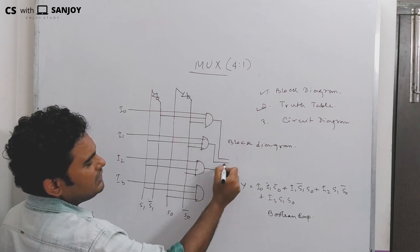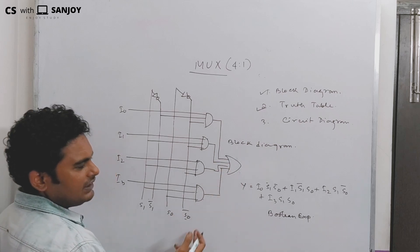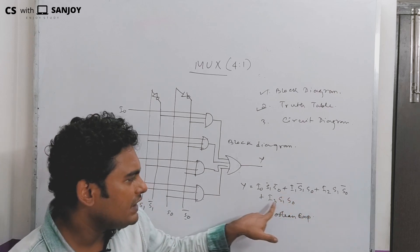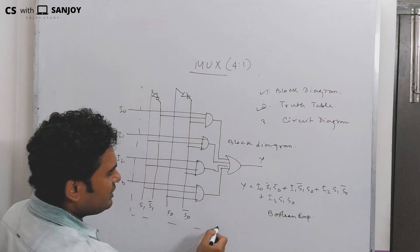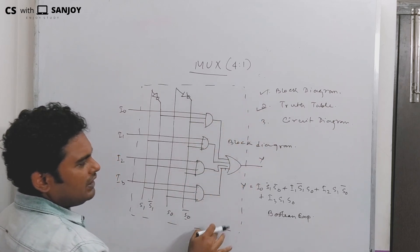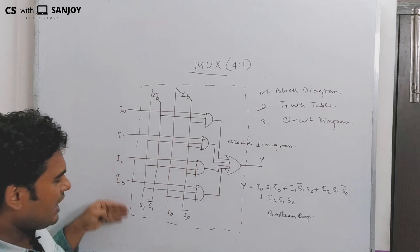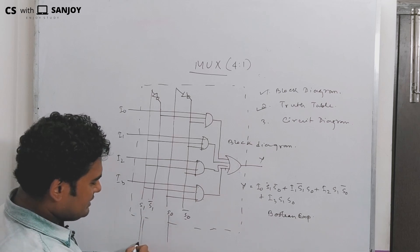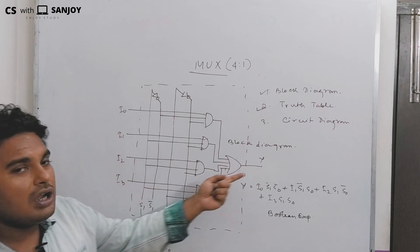Through the select line we route the selected input to the output. The final output comes through an OR gate combining all four AND gate outputs. So the OR gate gives us the final multiplexed output — you can trace the select block.